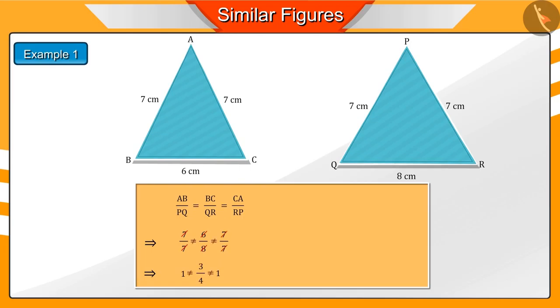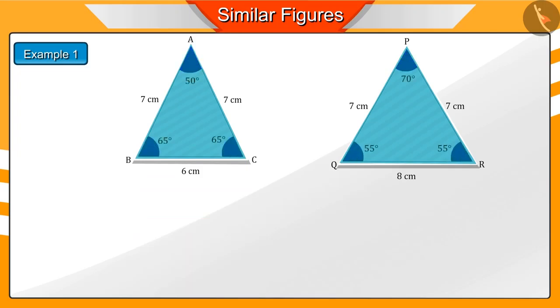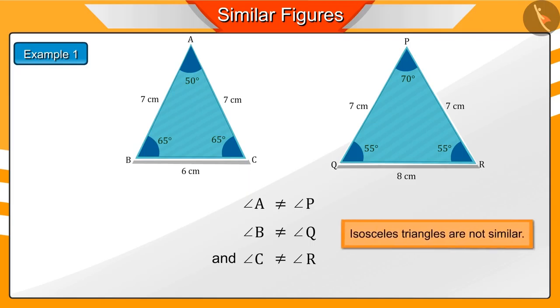These are not equal. That is, the condition of similarity is not being fulfilled. So, they are not similar. If we also look at their corresponding angles, then they are different too. So, the two conditions of being similar here are not satisfied. We can say that here, the isosceles triangles are not similar.